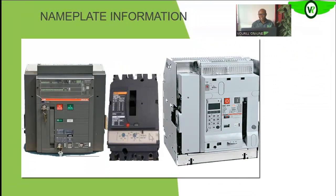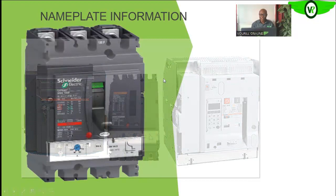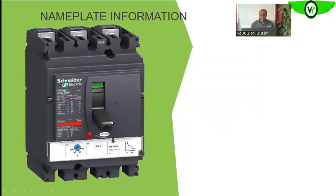Next we are going to look at the nameplate information of a molded case circuit breaker. We have looked at the miniature circuit breakers, so now we want to see the molded case circuit breaker. This is a three-pole molded case circuit breaker, and we want to understand what information is contained in the nameplate and how we can use it to make the appropriate selection.